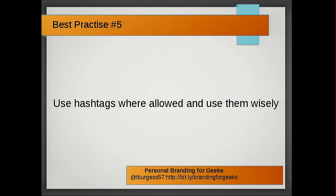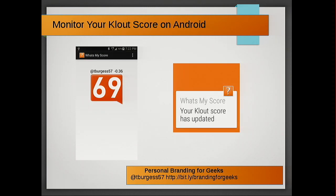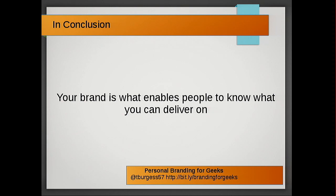Best practice number five: use hashtags where they're allowed, and use them wisely. Use hashtags that are getting attention, not silly ones nobody looks for. You can measure your social media with tools like Klout, which measures engagement and influence — a high Klout score can help you find better jobs, especially in Silicon Valley. Monitor your Klout score on Android with 'What's My App' on the Google Play Store. In conclusion, your brand enables people to know what you can deliver. We all want to move up, and being smart about social media shows people we'll deliver on what we say we can.